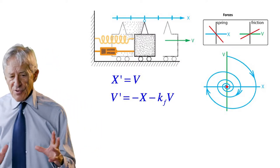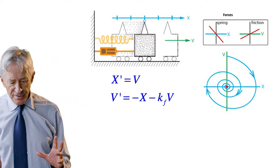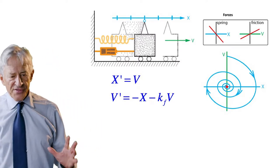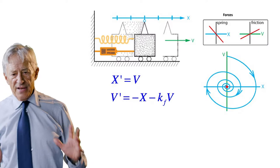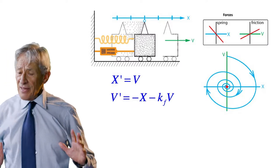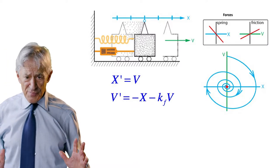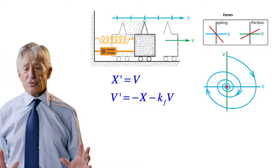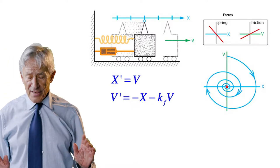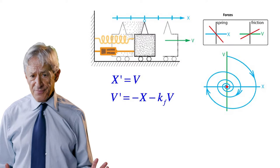This is the spring with friction — this is the clarinet without the clarinetist.